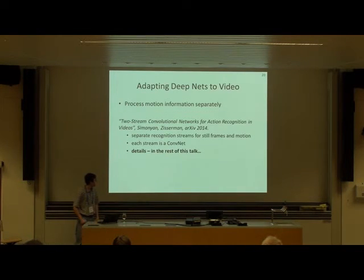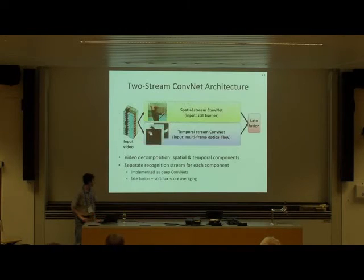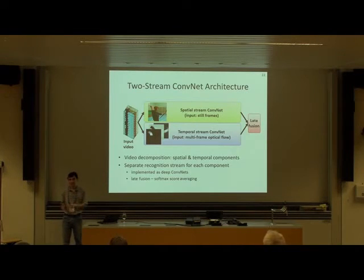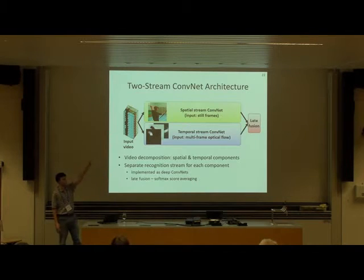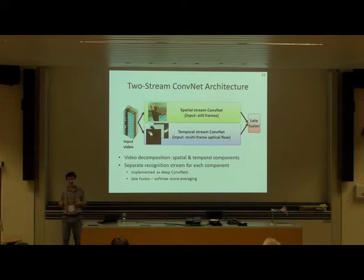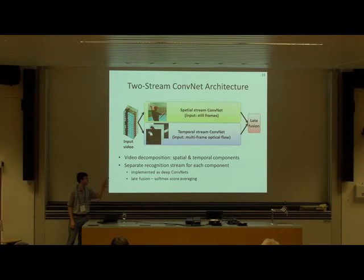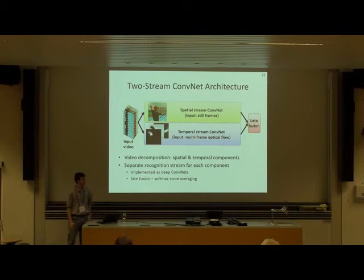What we did recently is propose a two-stream architecture which looks like this: it has two streams. One stream is a spatial stream and another is a temporal stream. The spatial stream captures appearance information from the video, while the temporal stream processes motion information. They have different inputs. For late fusion in our current architecture, we just take the predictions and fuse them by averaging or taking the maximum.